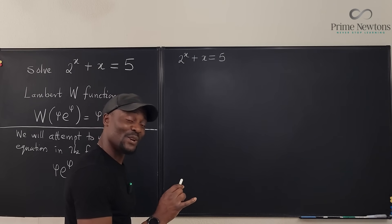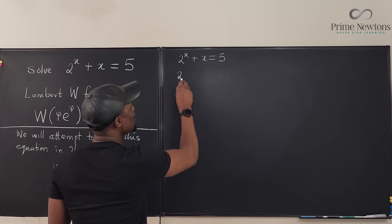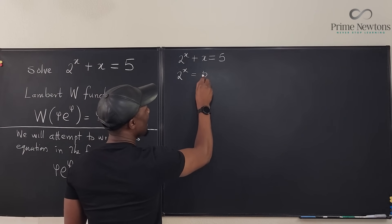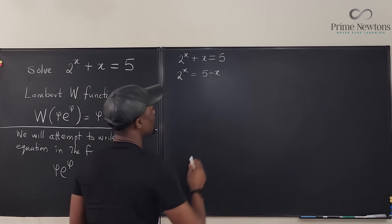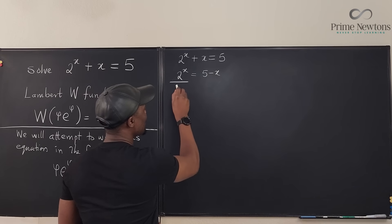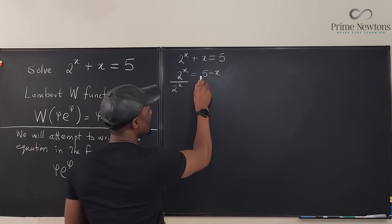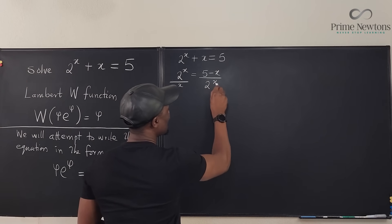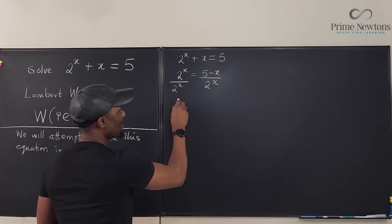Let's do that. Leave the exponential expression alone. So you're going to have 2^x = 5 - x. If I divide both sides by 2^x, this gives me 1.